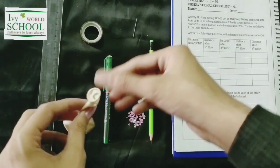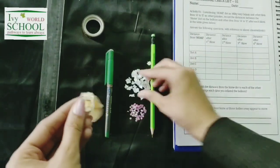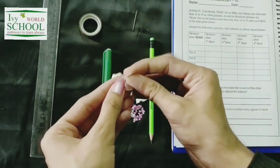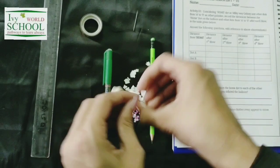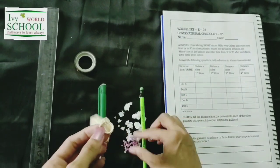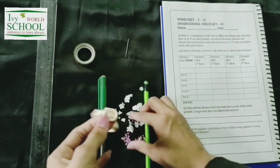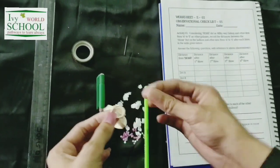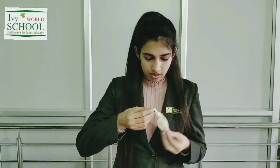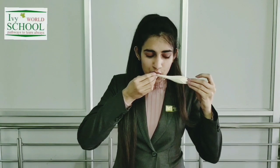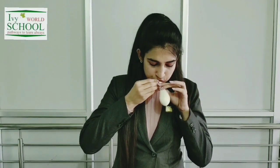First of all, we need to put these paper scraps into this balloon. After filling the scraps into the balloon, we have to blow a little bit of air into it — only this much for starting.